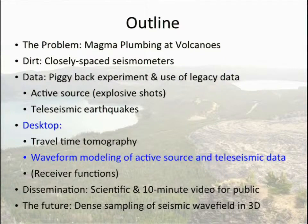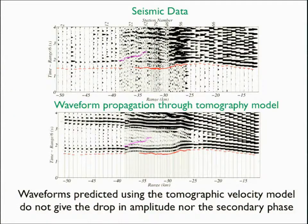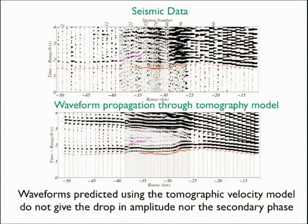I'm going to show you how the tomography is limited by some waveform modeling. At the top is the seismic data from the shot, and at the bottom is finite difference waveform modeling through our tomographic velocity model. We can reproduce the travel times, but that's about all we reproduce — the amplitude drop at the far side of the caldera is not there, and there are no secondary arrivals.